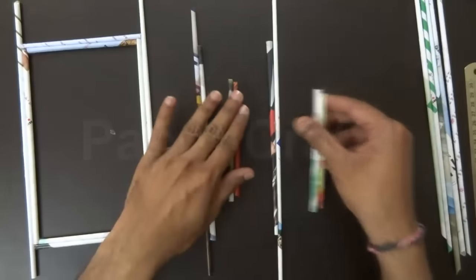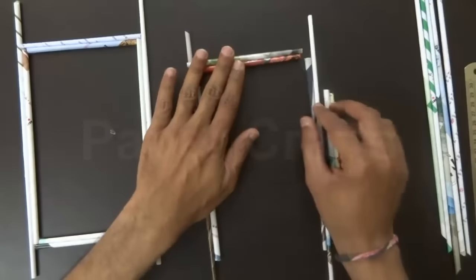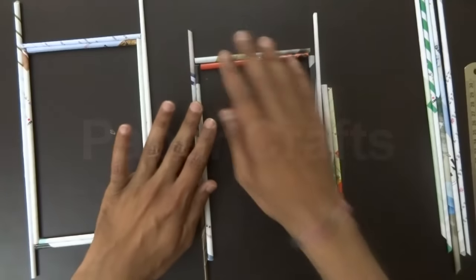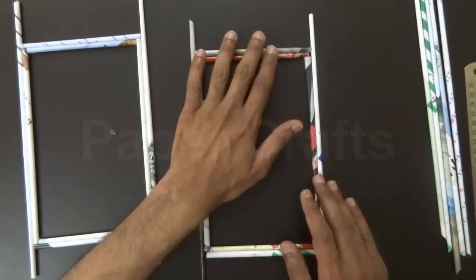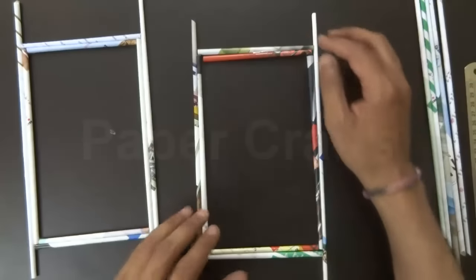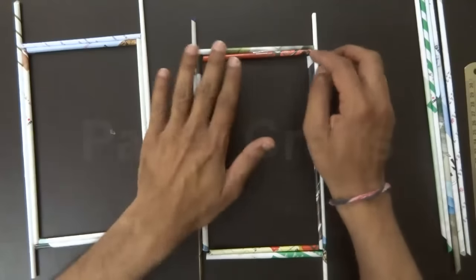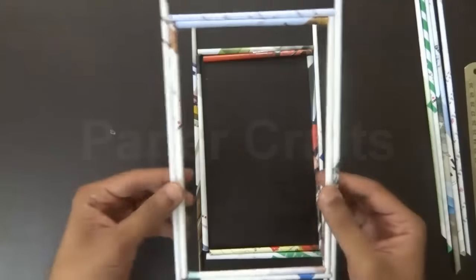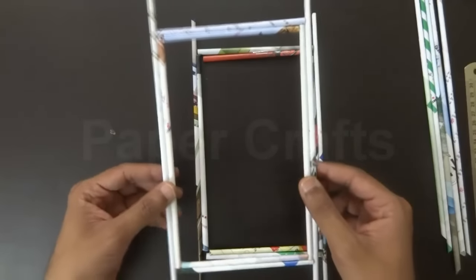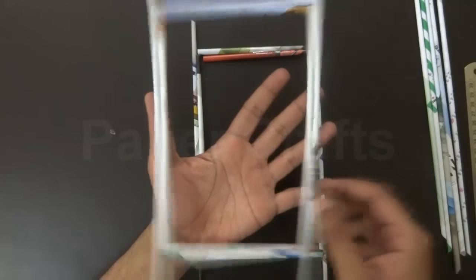Now align these four pair of sticks in this shape. Now apply glue on these four corners or use cellotape to stick them together. Then we will get a rectangle with length 8 inches and width 5 inches.